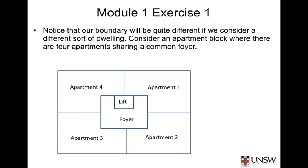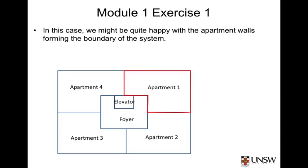So far, we've really only considered one sort of dwelling, and in your exercises you may have considered others. Notice that our boundary will be quite different if we consider a different sort of dwelling. Consider an apartment block where there are four apartments on each floor sharing a common foyer. In the case of an apartment, we might be quite happy with the walls forming the boundary of the system, because we don't have the additional complication of yard and fence line.